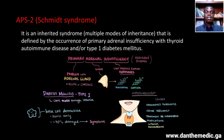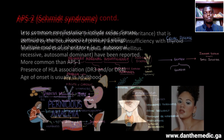If there is primary adrenal insufficiency and thyroid autoimmune disease, you've diagnosed Schmitt syndrome. If there's primary adrenal insufficiency and type 1 diabetes mellitus, you've diagnosed Schmitt syndrome. And if there's primary adrenal insufficiency, thyroid autoimmune disease, and type 1 diabetes mellitus together, you've also diagnosed Schmitt syndrome.